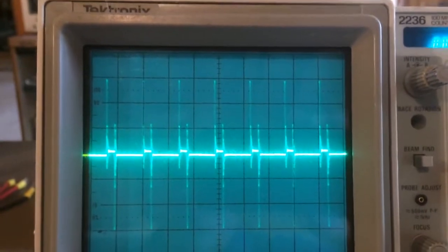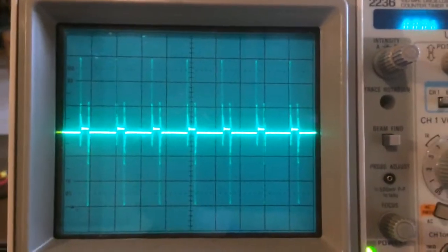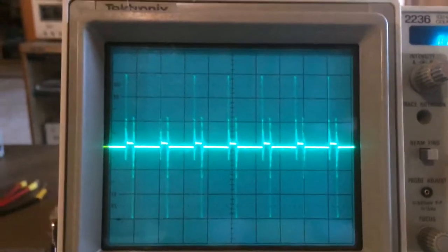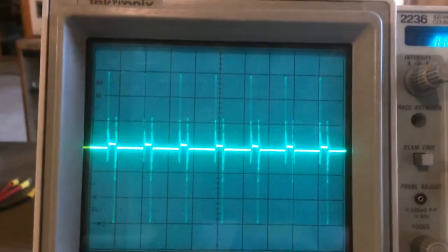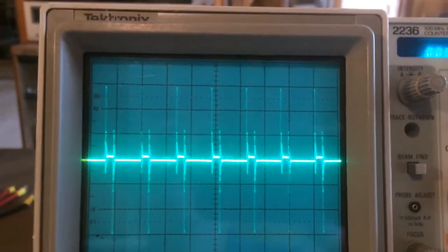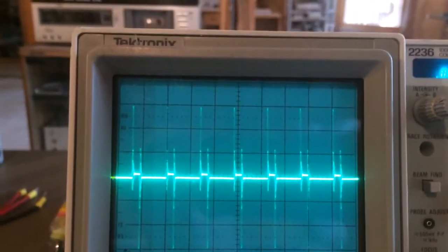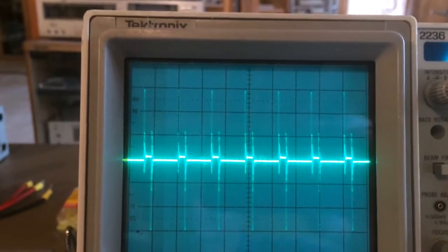One over the period equals the frequency, so the frequency is 100 kilohertz, one divided by 10 microseconds. That pulse that you're seeing, that larger pulse there, is from the flyback event.